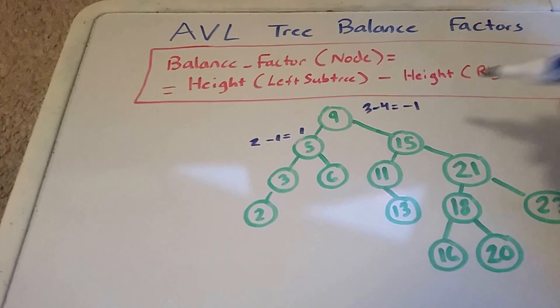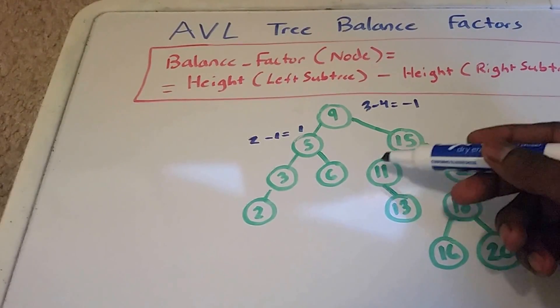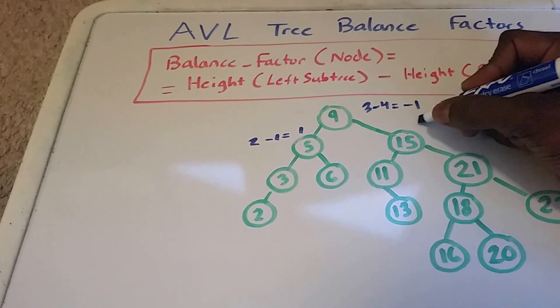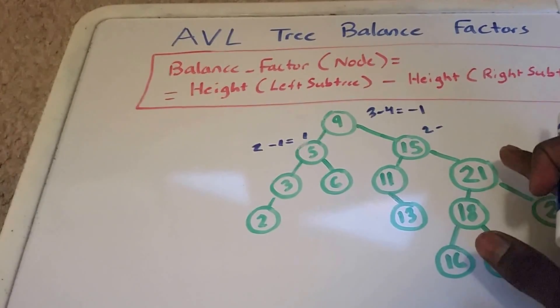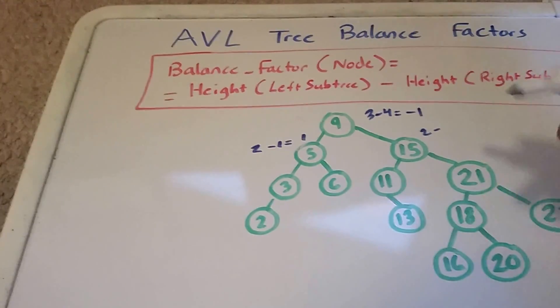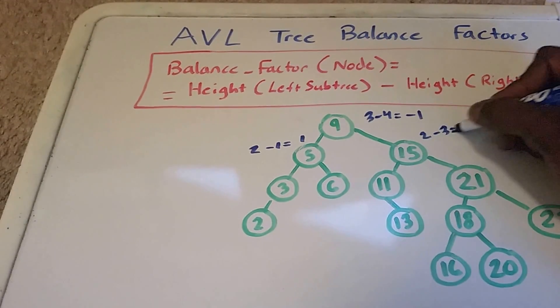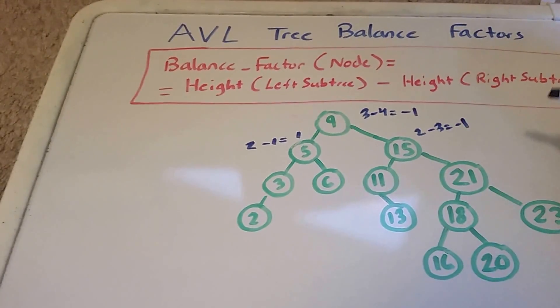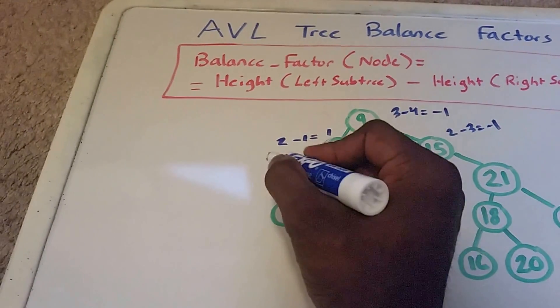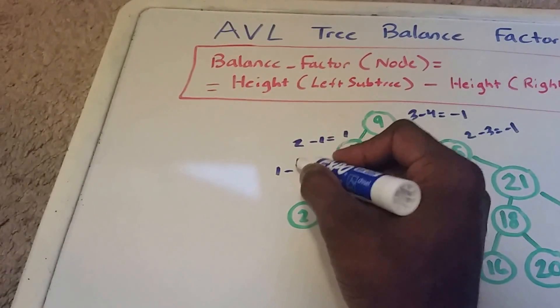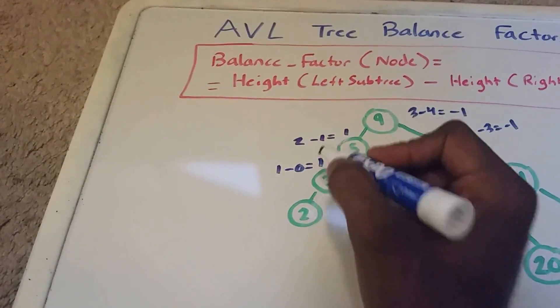Let's try this 15 here. The left subtree is 1, 2. We have 2 minus the right, 1, 2, 3. So that's 3, so it's equal to negative 1. Let's go over here. This 3 here, the left subtree has 1. So we have 1 minus nothing on the right, so 0, so it equals 1.